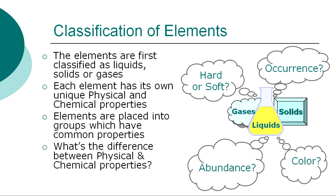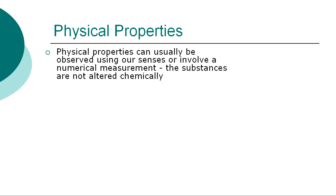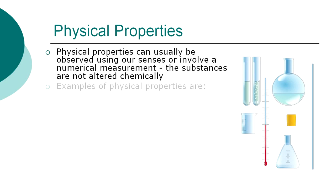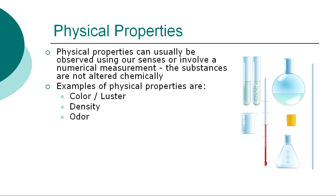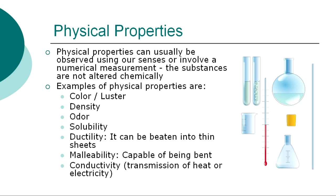What's the difference between physical and chemical properties? Physical properties can usually be observed using our senses or involve a numerical measurement — the substances are not altered chemically. Examples of physical properties are the color, luster, density, and odor of an element. Its ability to be dissolved, called solubility. Whether it can be easily pulled or stretched into a thin wire, called ductility. Whether the element can be easily shaped or bent, called malleability. Its ability to transmit heat, electricity, or sound, called conductivity. These, together with the freezing, boiling, and melting points, are all examples of the physical properties of elements.